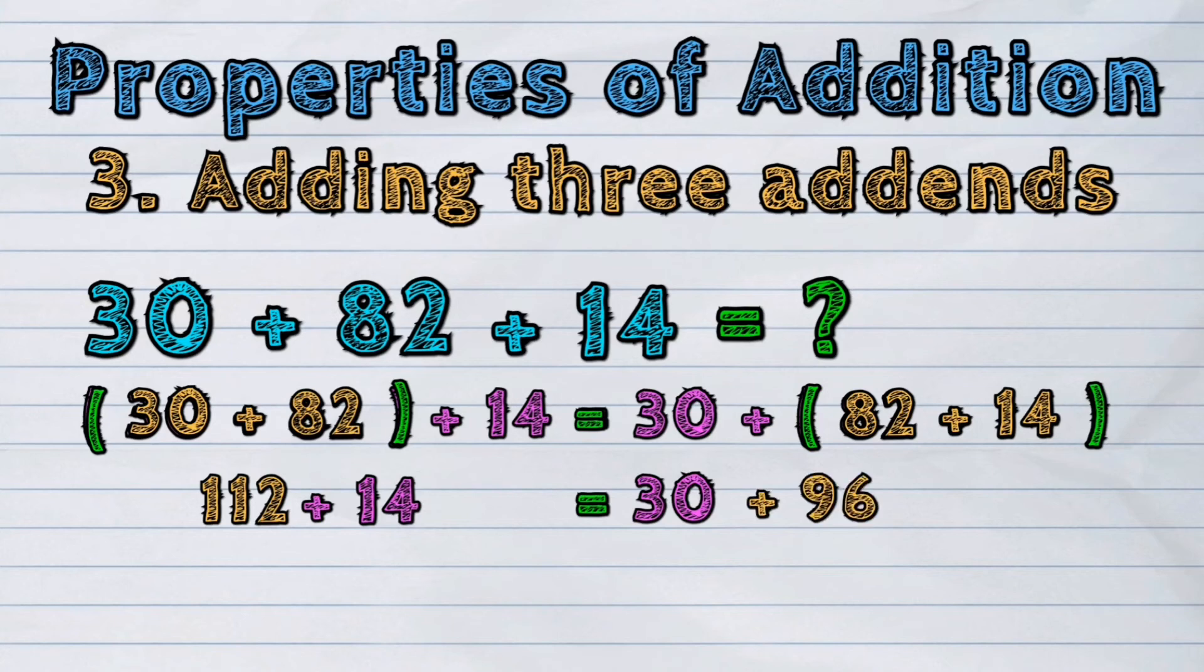It's 96. 112 plus 14 is equal to 126, and the other grouping also gives the sum of 126.